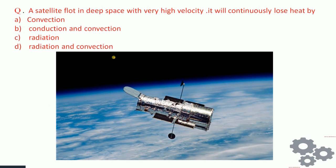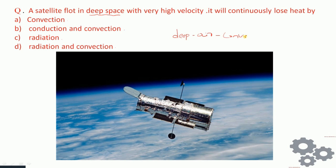A satellite orbiting in deep space at very high velocity will constantly lose heat by: convection; convection and conduction; radiation; or radiation and convection? In deep space there is no air for convection to take place, and there is no conduction because there is no physical contact with any other body. So the heat transfer must occur by radiation.